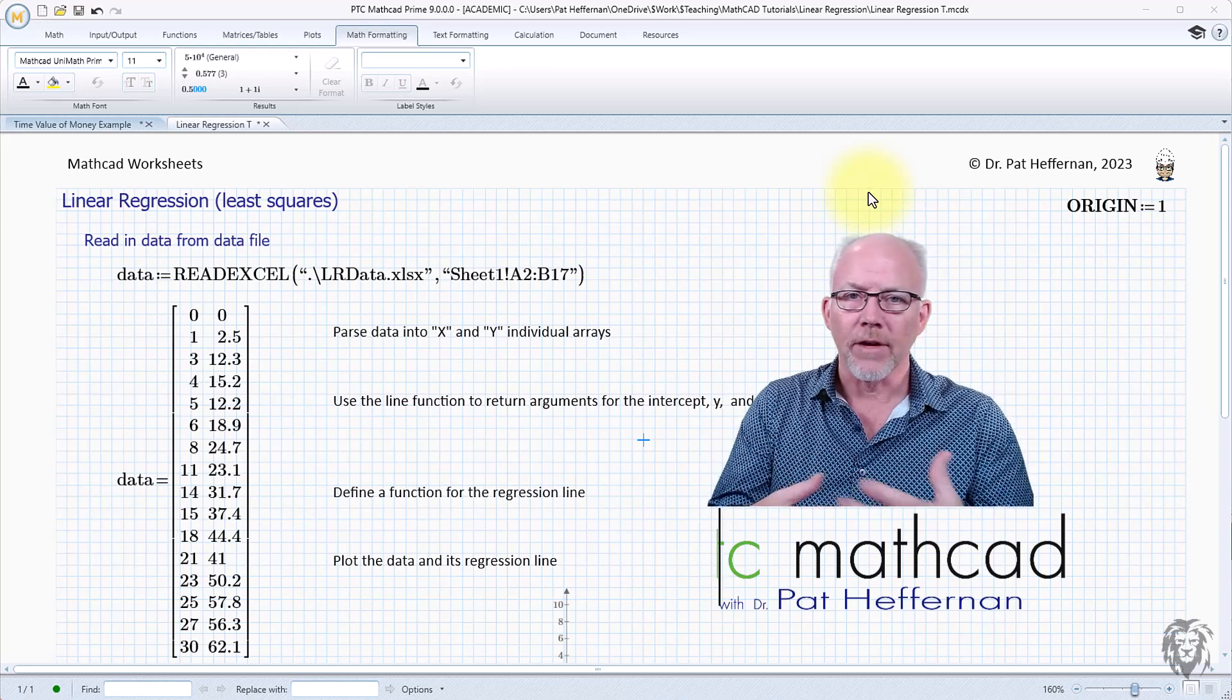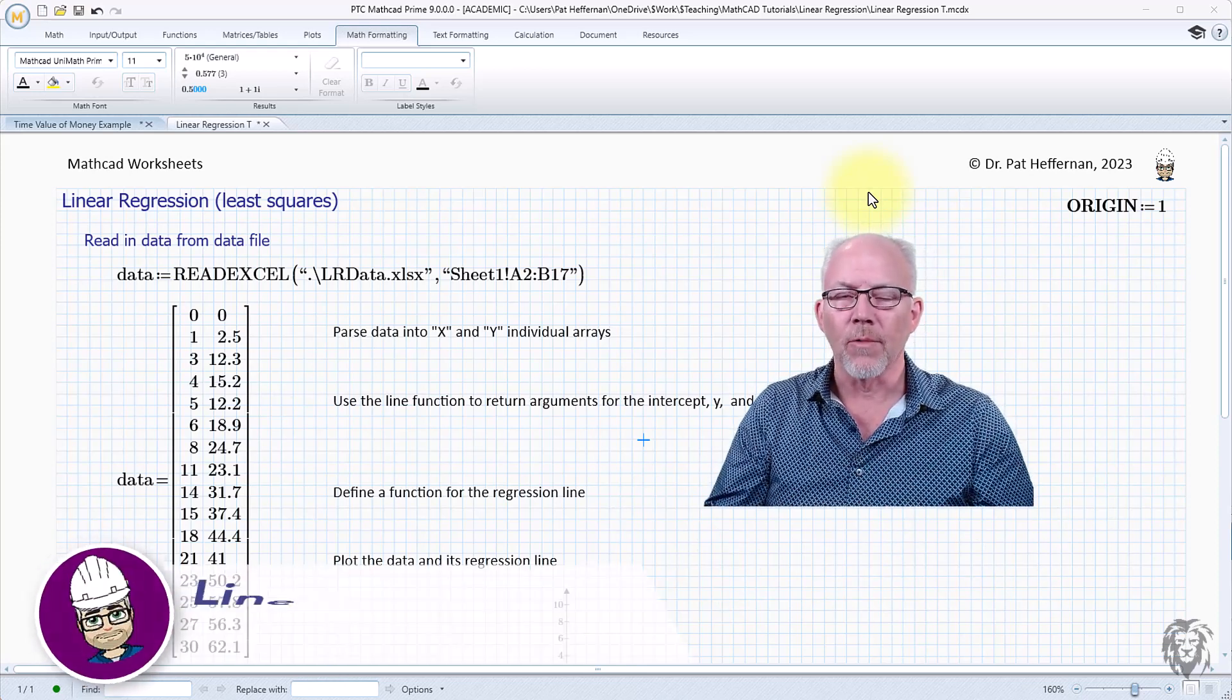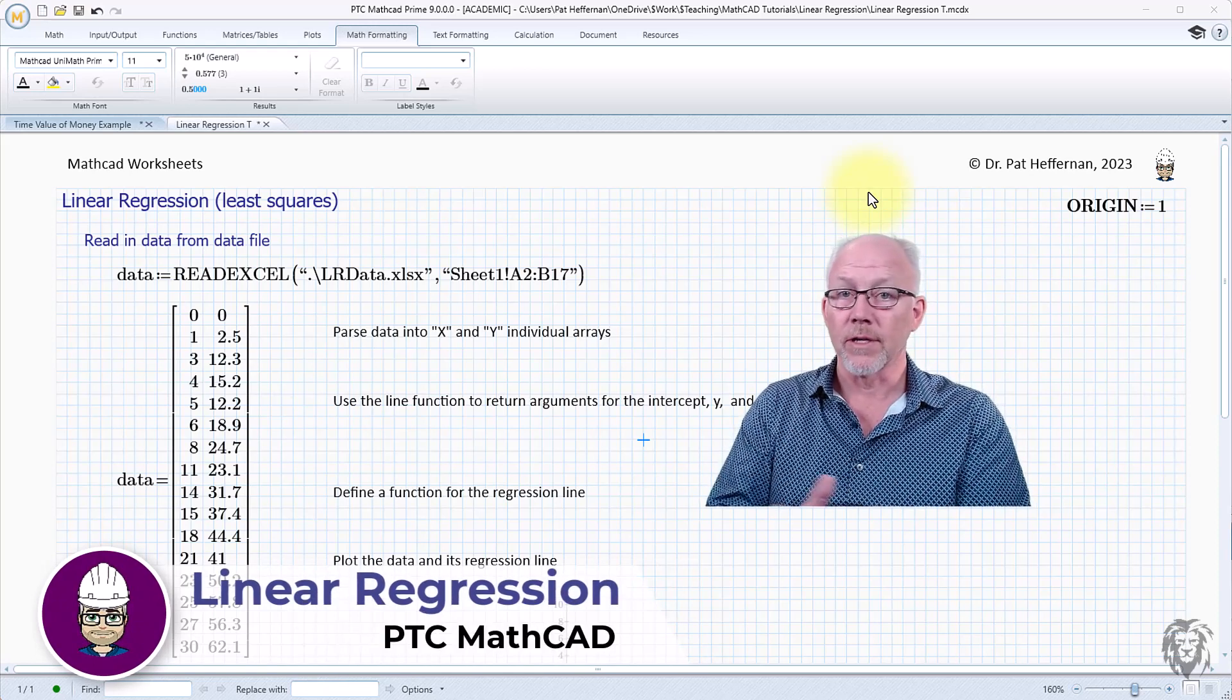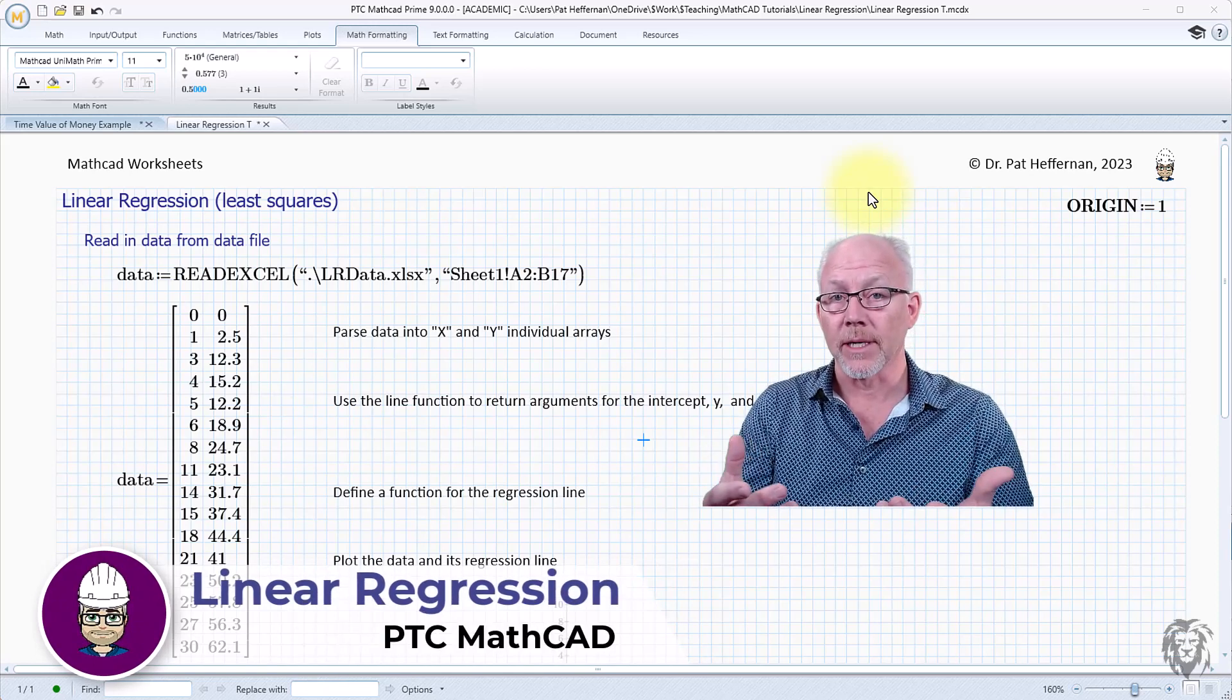So you've got a data sheet, you've got a series of data points, and you want to plot those data points but also give the regression line.